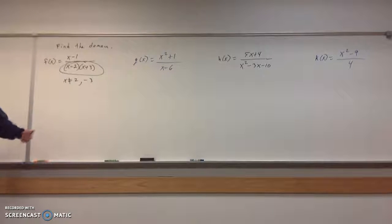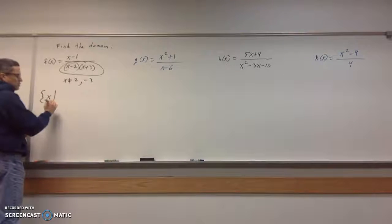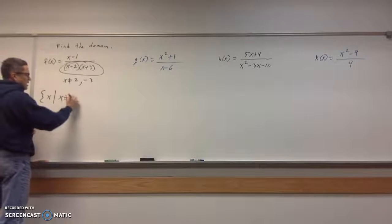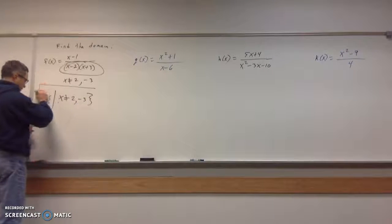So, we talked about set-builder notation in the previous video. That's what I'm going to write my answer in, just using set-builder. So that's the values of x such that x is not 2 and x is not negative 3. Well, that's what the answer is.